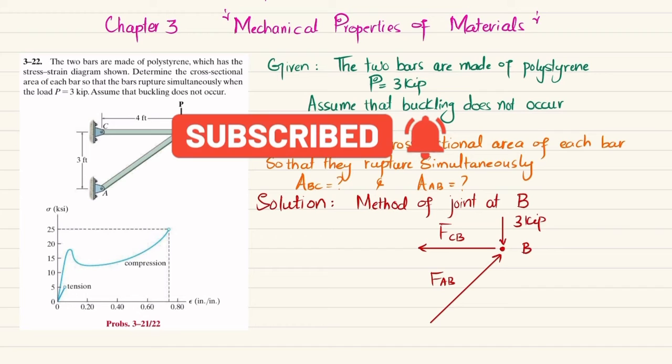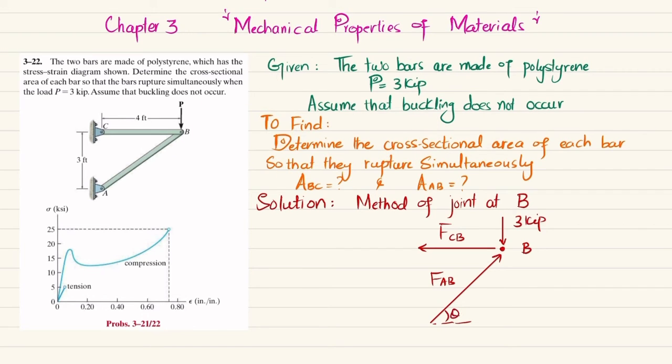Now if you look at this, FAB will be at a certain angle theta. And you can see that this height is 3 feet and this length is 4 feet. So this hypotenuse will be 5 feet. So if I take sine theta, sine theta will be equal to 3 over 5. If I take cos theta, cos theta will be 4 by 5.